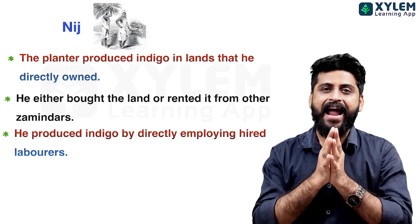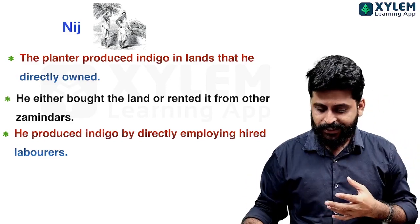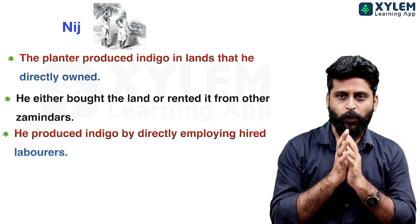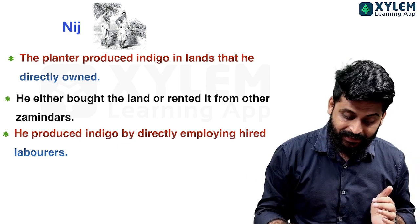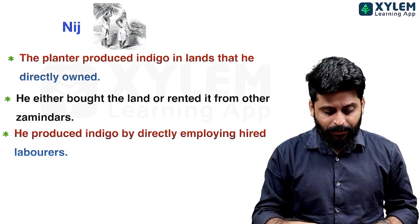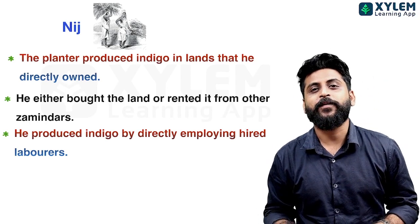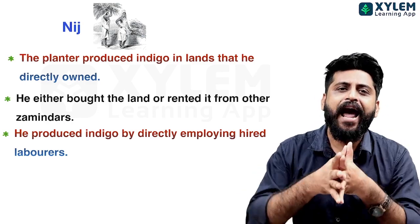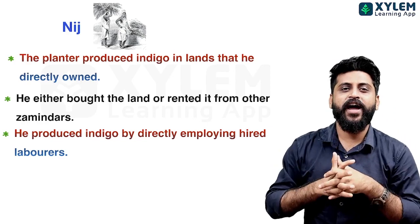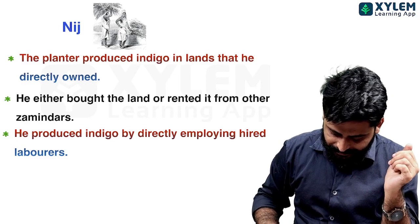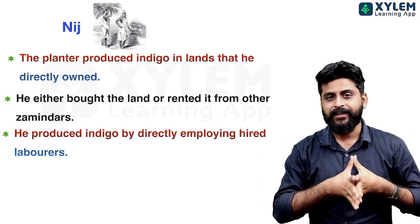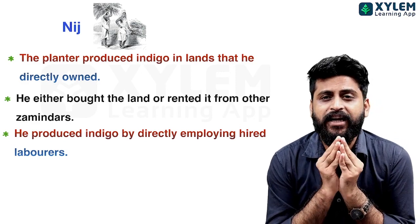We learn that the planter produced Indigo on lands that he directly owned. The first feature of Nij Cultivation is that the land is directly owned by the planter. The second feature is that he either bought the land or rented it from other zamindars.